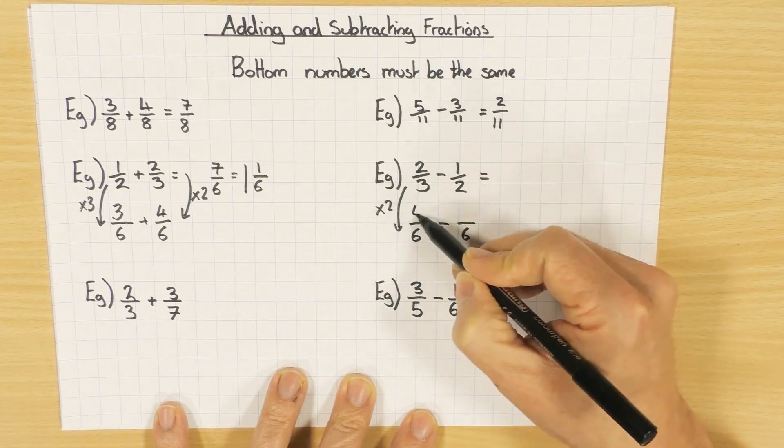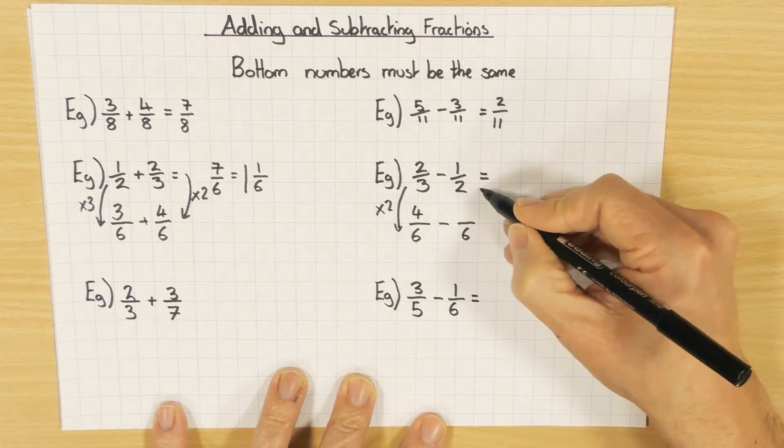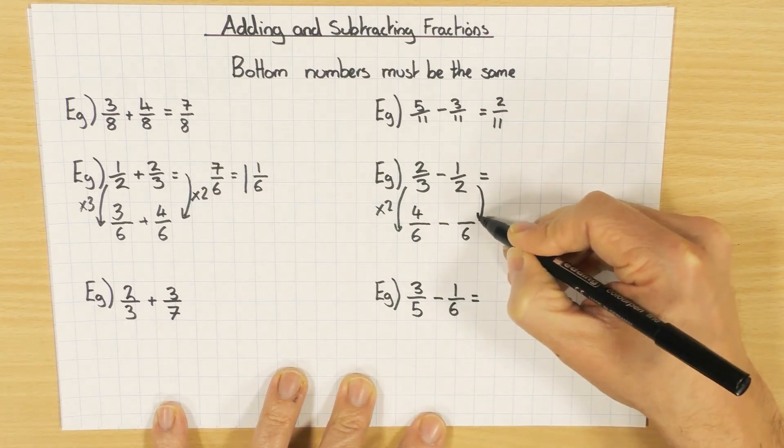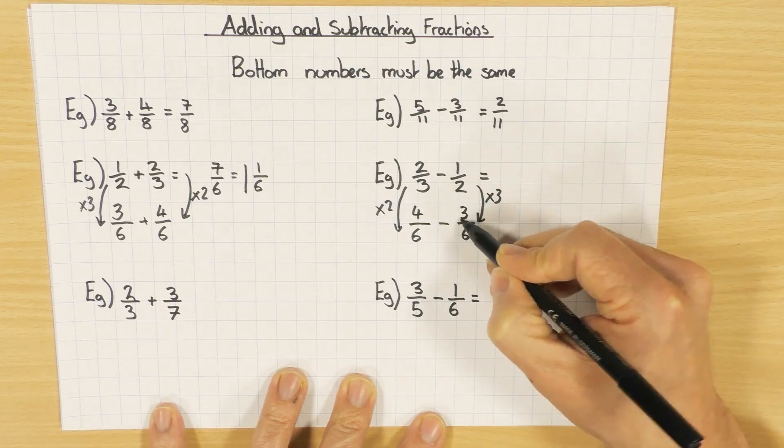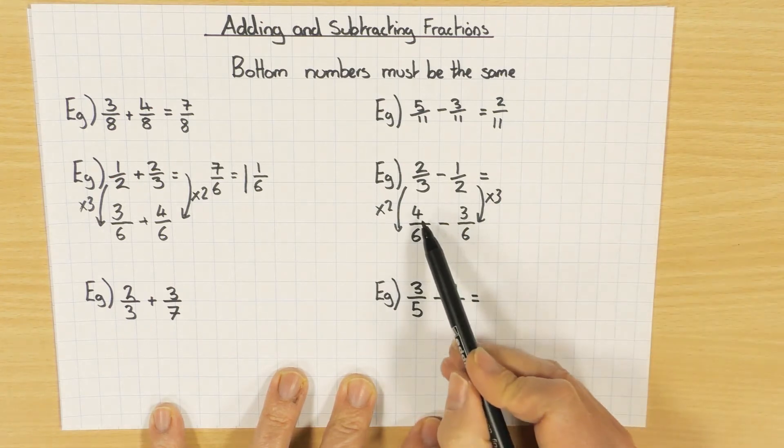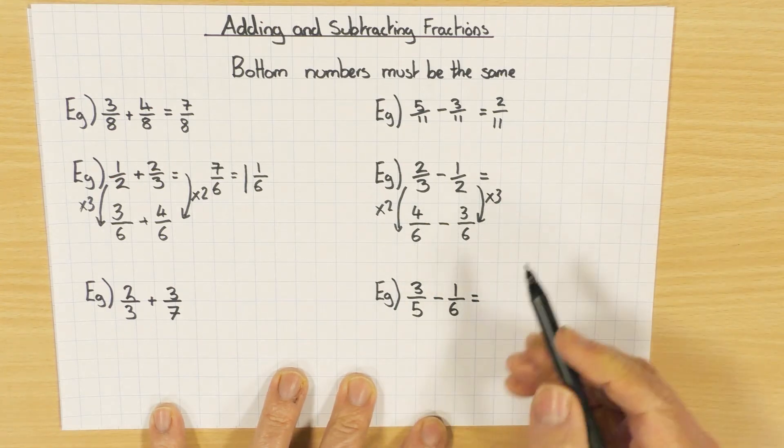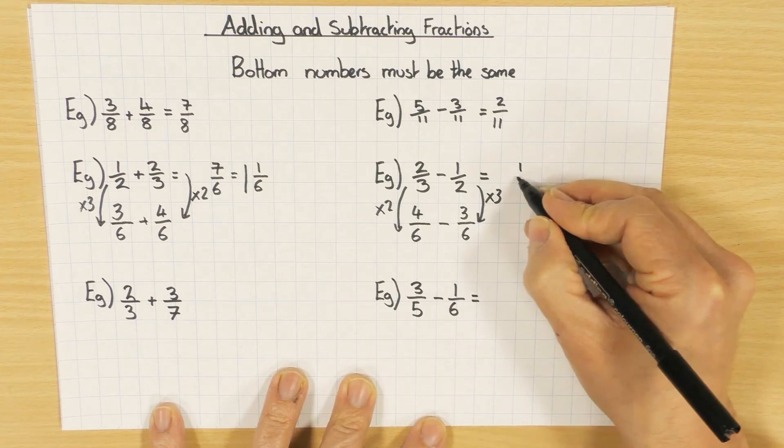What have I done to the three to change it into a six? I've multiplied by two. So both numerator and denominator is going to be multiplied by two. But this time on the right hand side, what have I done to two to get it out of six? I've multiplied by three. So one times three is three. And this one's a really easy one: four sixths take away three sixths, answer one sixth.